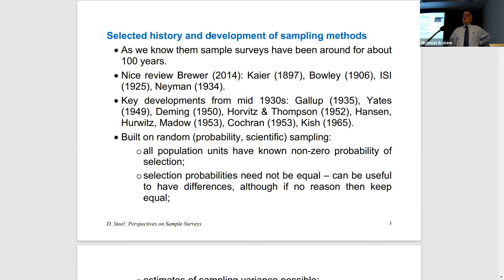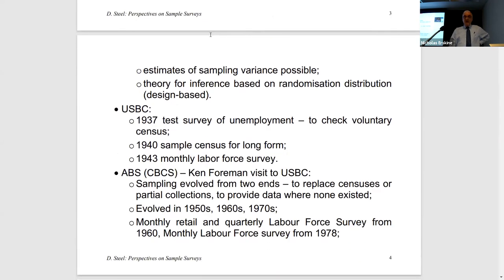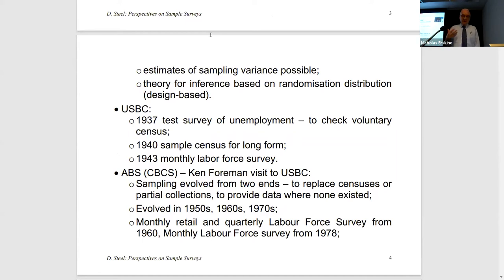Probabilities don't need to be equal, and it can be useful to vary them — to put more of the sample where there's more variation, more interest, and less cost. But don't vary the probabilities if you don't have a reason to do so. In this theory there were also estimates of sampling variance, which was an important part of the development. The inference was based on the randomization distribution, which is unfortunately called design-based. I prefer to talk about the randomization distribution rather than design-based.